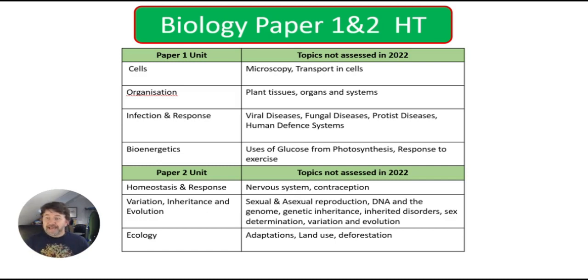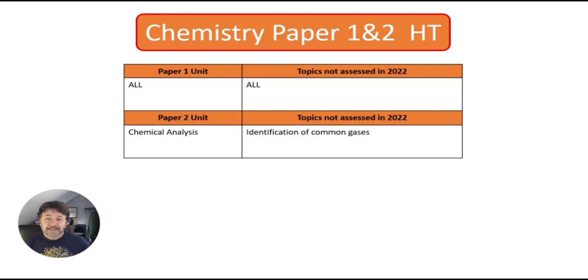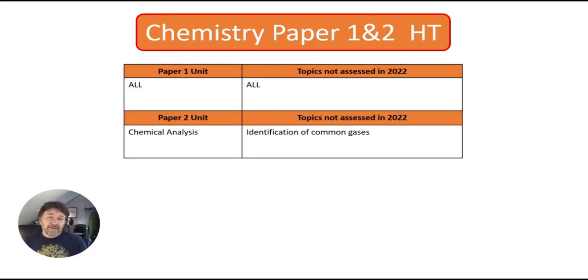Obviously you're going to revise everything, but I'm telling you this is probably a good bet to have a look at. For chemistry, basically in paper one everything was in there — the only thing they didn't have to revise was identification of common gases, so I think that's a really good one for you to cover for this year.